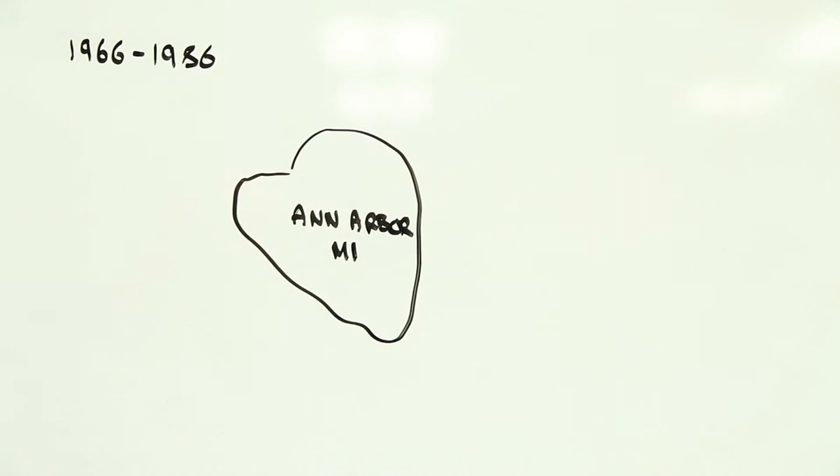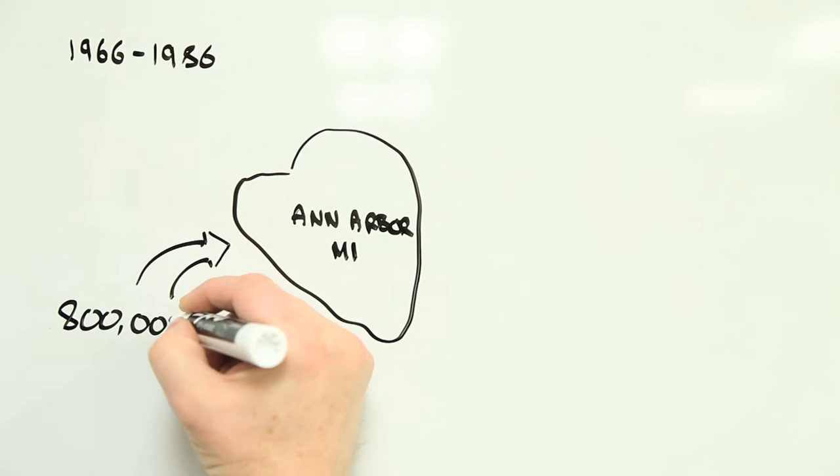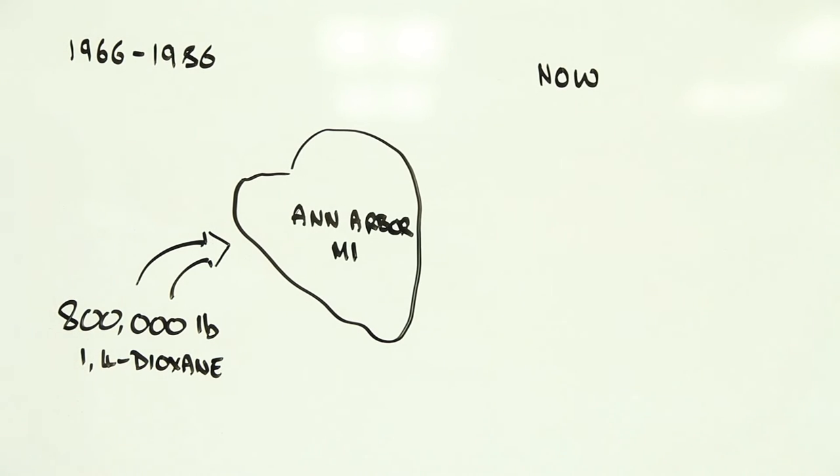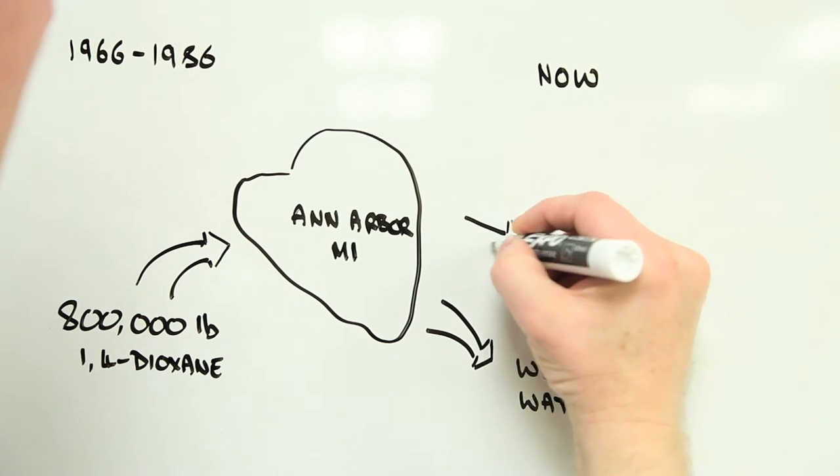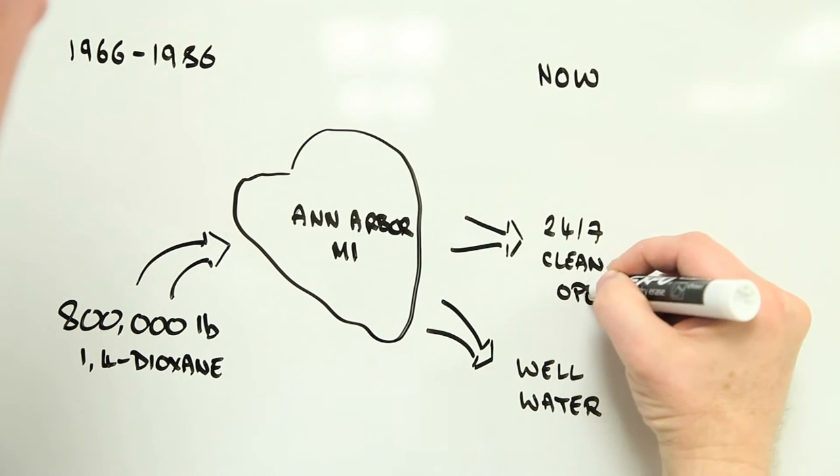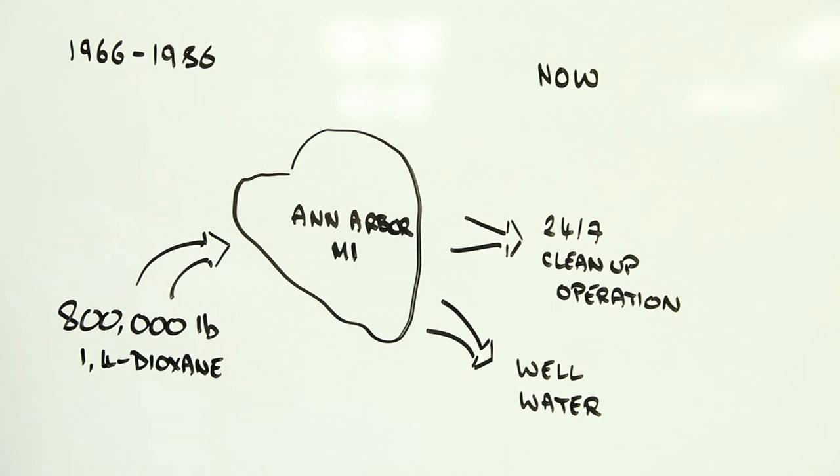From the 1960s to the 1980s, tens of thousands of gallons of dioxane were released into the environment to the west of the city. Aquifers underneath the city were contaminated and some dioxane ended up in private wells. Clean-up operations are still ongoing and there's a groundwater use prohibition zone where contamination levels are excessive.